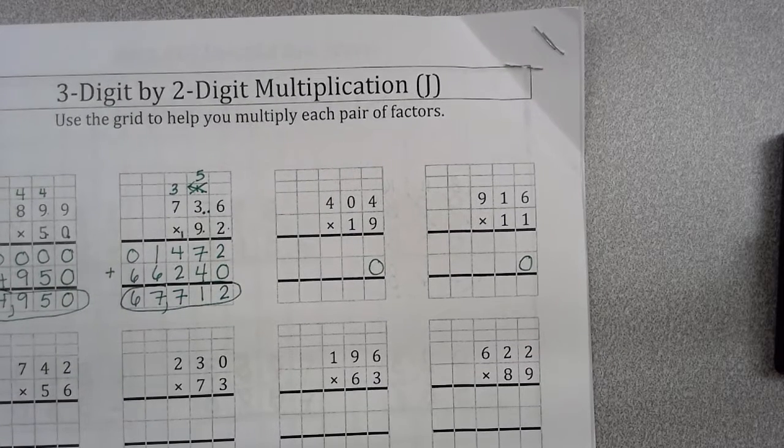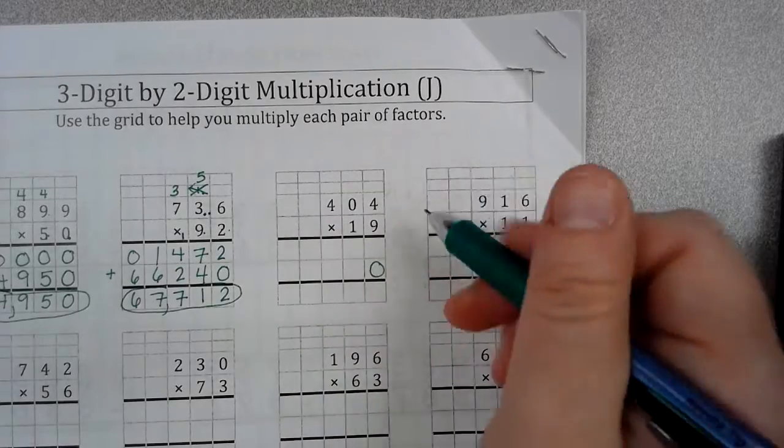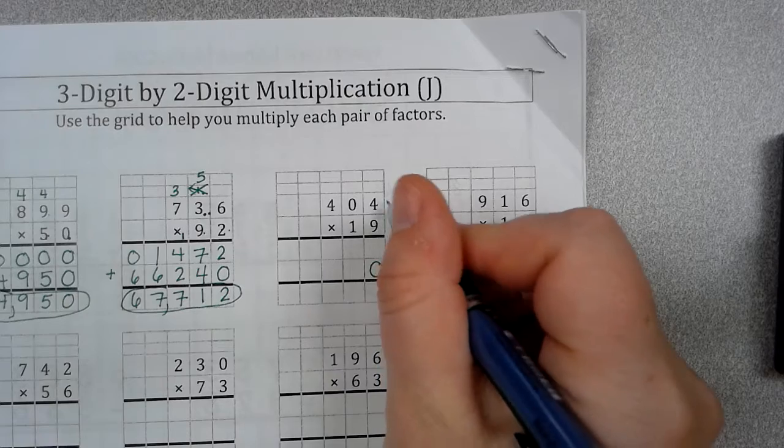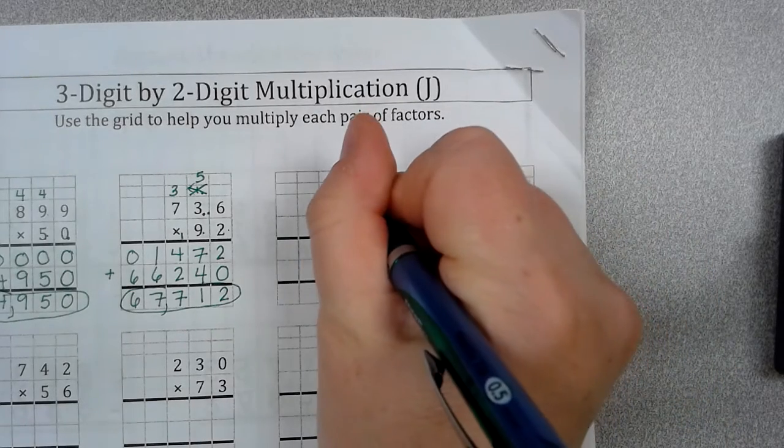All right. Now, here we go again. 404 times 19. We're going to start with our 1's place. 9 times 4 is 36. So, drop my 6. Carry my 3.